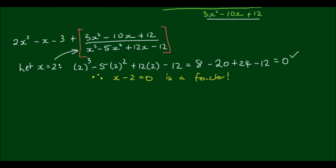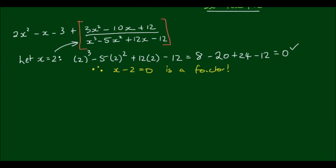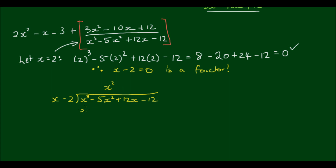We need to perform long division again to find the other factor. Dividing x cubed minus 5x squared plus 12x minus 12 by x minus 2: I write the divisor on the left, write the long division bar, and write x cubed minus 5x squared plus 12x minus 12 inside. What do I need to multiply x by to get x cubed? The answer is x squared. So x squared times x is x cubed; x squared times negative 2 is negative 2x squared. Subtracting, the first term cancels out and negative 5x squared minus negative 2x squared gives negative 3x squared.